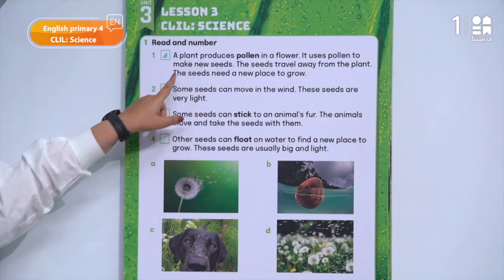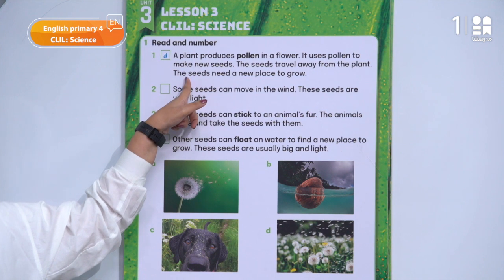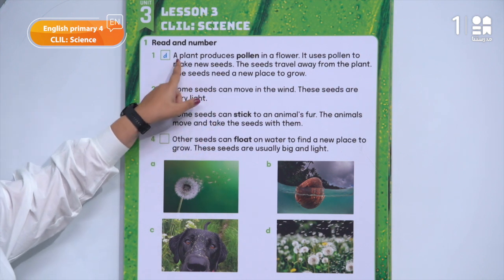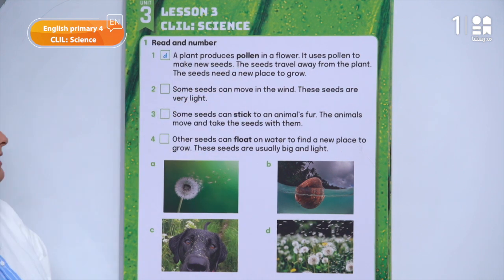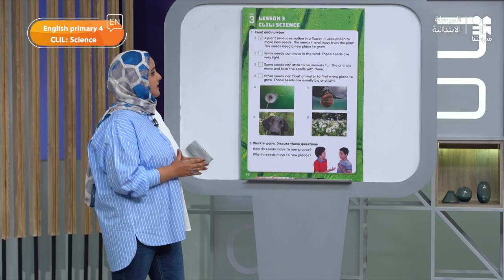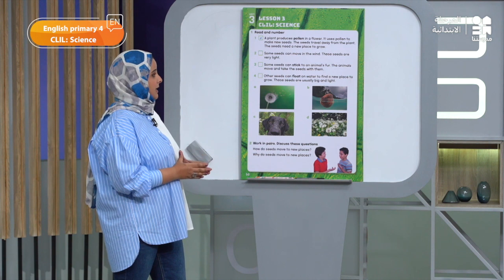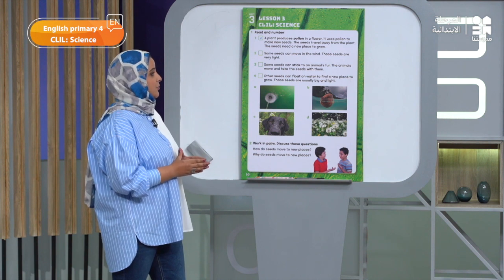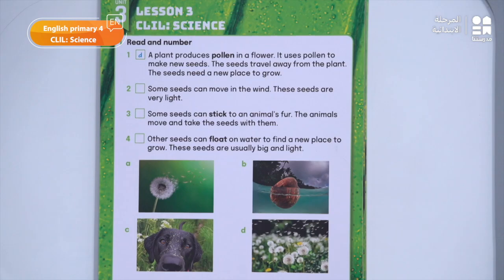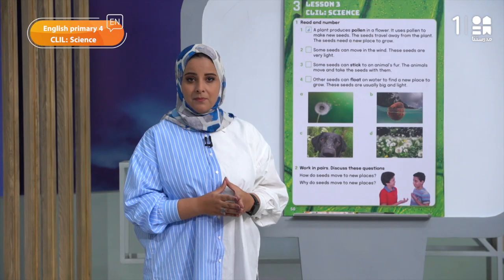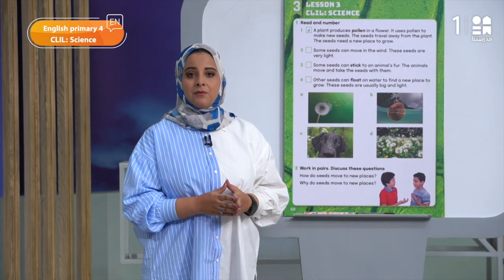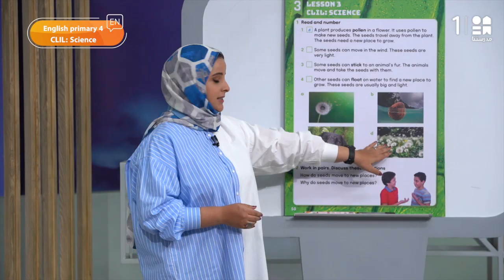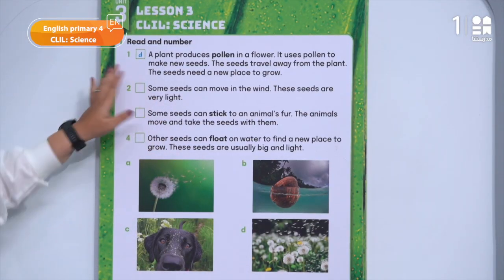Let's look together at the first one. A plant produces pollen in a flower. It uses pollen to make new seeds. The seeds travel away from the plant. The seeds need a new place to grow. Which picture is this? Very good. Picture D, and it's written here.